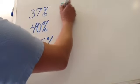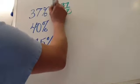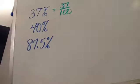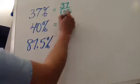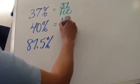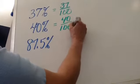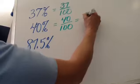37% becomes 37 hundredths. 40% becomes 40 hundredths, which simplifies to two-fifths.